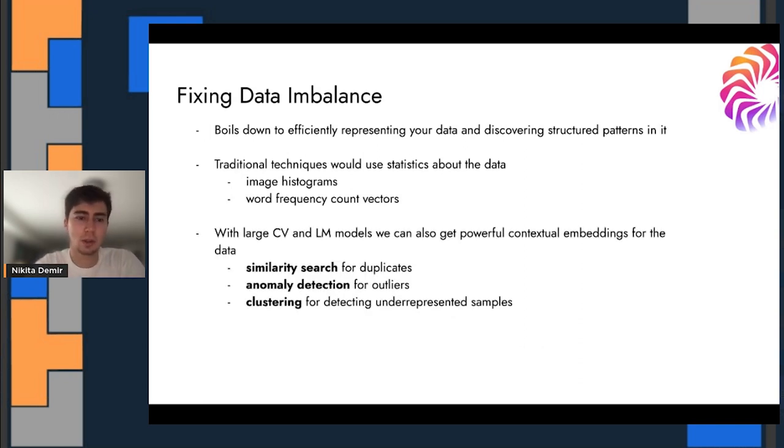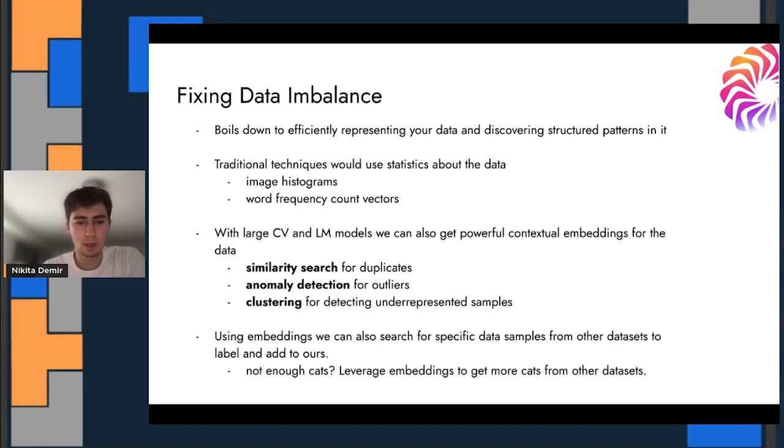These days, what's pretty neat is that with the large CV, LLM models, we can get pretty powerful contextual embeddings for the data, which kind of opens up a whole new field of ways of organizing and showcasing insights in the data. For example, similarity search for duplicates, you can take a sample and look for embeddings that are similar to it and those will be, that's a great way of finding duplicates. You can perform the opposite, so anomaly detection to find outliers. And general clustering on the embedding space can help you find these regions that you can then rank by size and impact on the model's performance. So that gives you the regions that are underrepresented or most contributing to the model's performance decrease.